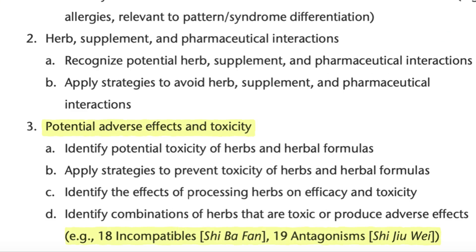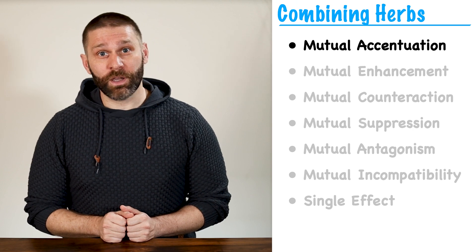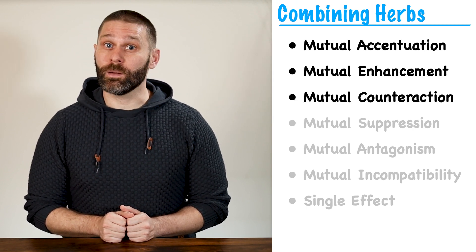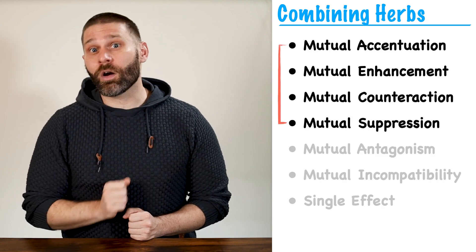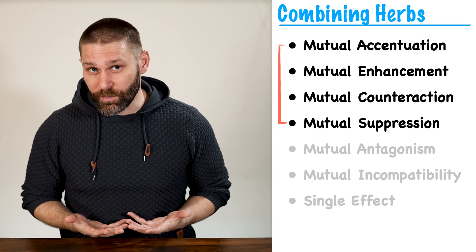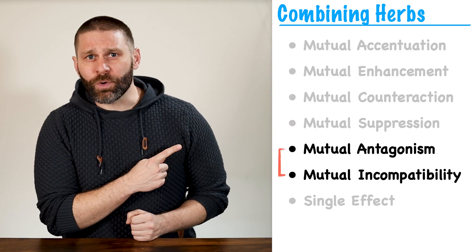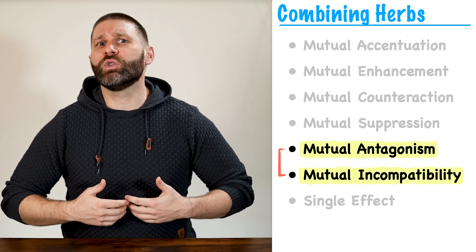This is usually discussed under the heading of herb safety and potential adverse effects of herbs. To give you some context, remember in the very beginning of herbs class we talked about techniques for combining herbs. These had names like mutual accentuation, mutual enhancement, mutual counteraction, mutual suppression, and so on. These first ones are all beneficial combinations, or combinations we would want to use in a treatment. But the next two — mutual antagonism and mutual incompatibility — are combinations that we want to avoid.